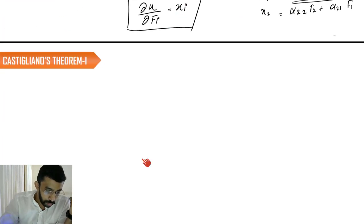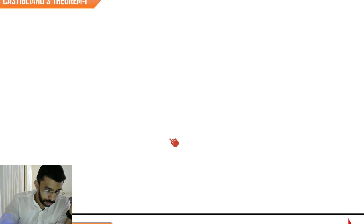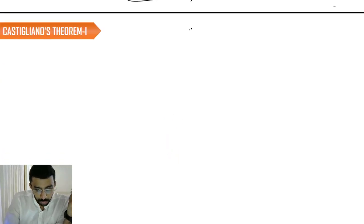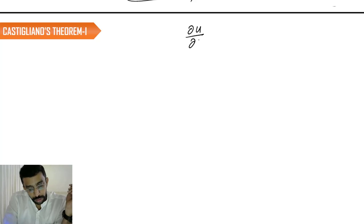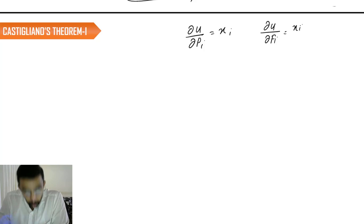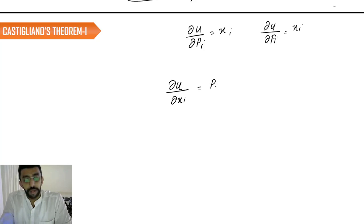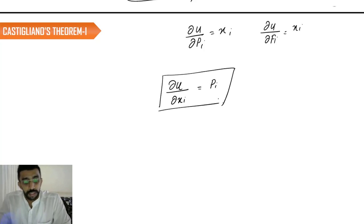And Castigliano's second theorem. So the first theorem he stated that dU by dPi is equal to Xi, or in other words, dU by dFi is equal to Xi. This is one theorem, and just opposite to this, he has also stated that if you differentiate the load with respect to a deflection, you are going to get the value of load out there. This is the other Castigliano theorem.